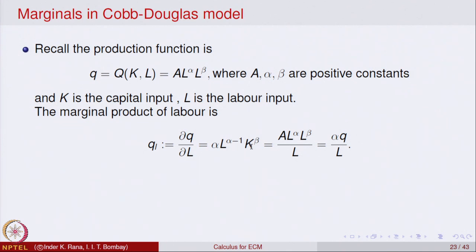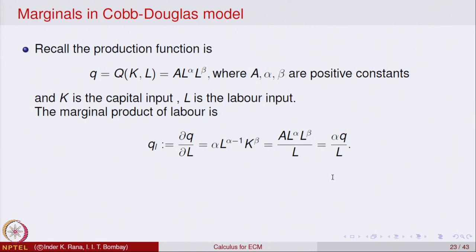We can multiply numerator and denominator by L, which gives alpha times L raised to power alpha times K raised to power beta divided by L. Recognizing that the numerator is alpha times Q, the marginal with respect to L can be written as alpha Q divided by L. Similarly, the marginal with respect to K is the partial derivative of Q with respect to K, which gives beta Q divided by K.